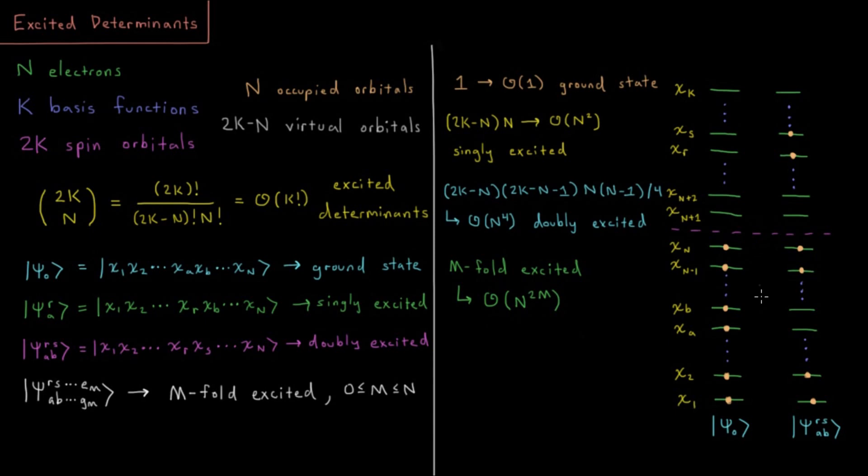So triply excited there's an n to the 6 number, quadruply excited n to the 8th. So this is why when we're dealing with excited determinants, we have to very quickly usually truncate the number of excitations which are allowed in whatever calculations we're doing, because it's going to grow to a computationally infeasible number very, very fast, unless we have a very, very small number of electrons and thus occupied orbitals in our chemical system.